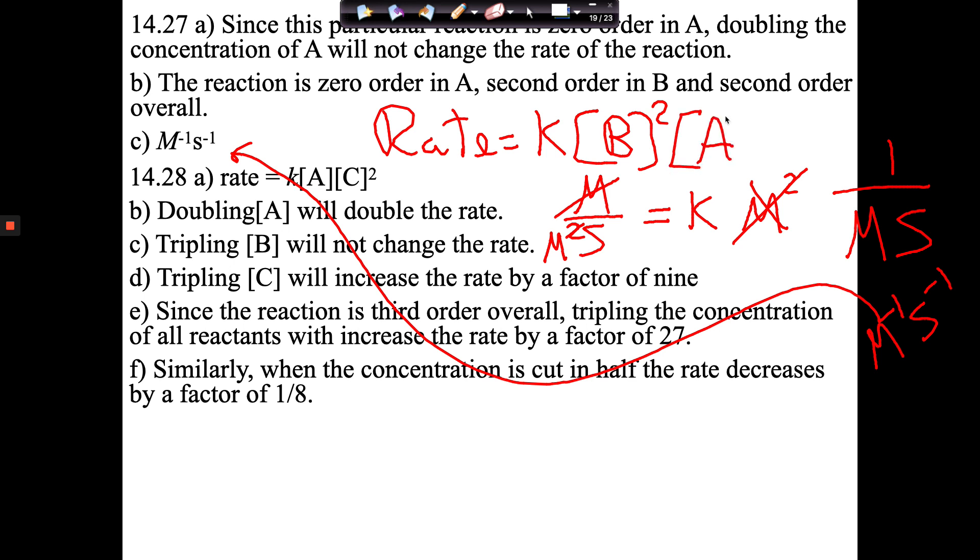So this one was, and I'll just write it in. So this was zero order, zero order in A, second order in B. And so the zero order A means that that goes away. That's equal to one. And that just leaves us with B being second order. So two plus zero is second order overall. So we would say that this is zero order in A, second order in B, and second order overall. Is that okay?